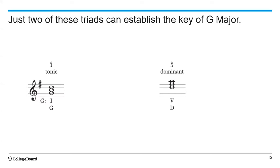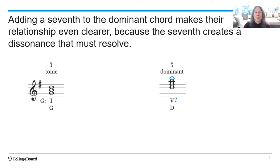Adding a seventh to the dominant chord makes their relationship even clearer, because the seventh creates a dissonance that must resolve. Here it's an F-sharp to a C, a diminished fifth, that resolves into a third. You've probably learned about this resolution when you learned about intervals in the fundamentals portion of the course.